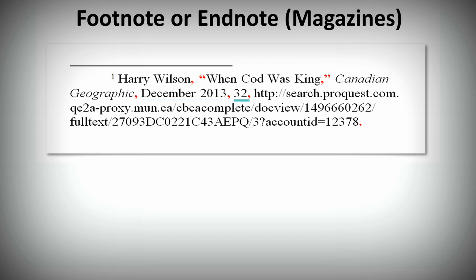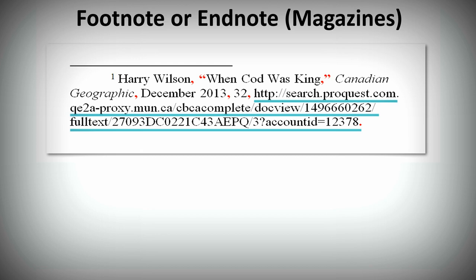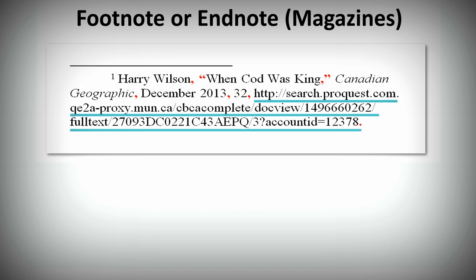After the comma, enter the page number where you found the quotation. For online articles, enter the URL for the article. If it has a DOI, or digital object identifier, use that instead of a URL. However, many magazine articles won't have a DOI number. If you used the print version of the magazine, you would just end the citation with a period after the page number.